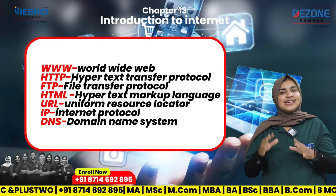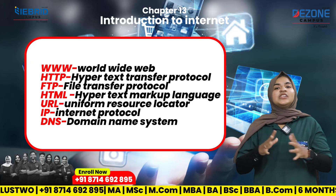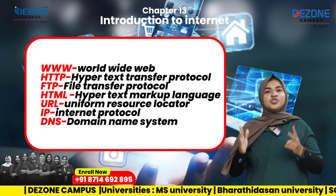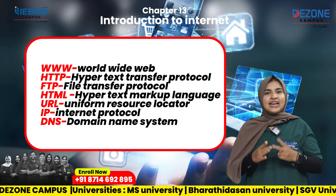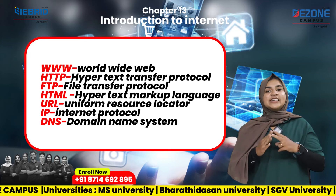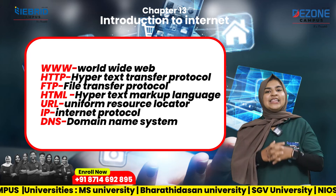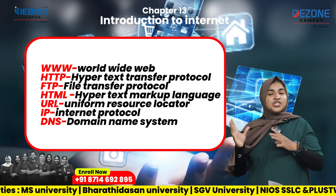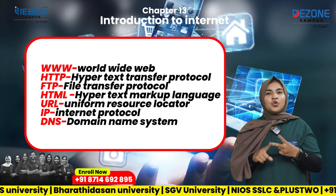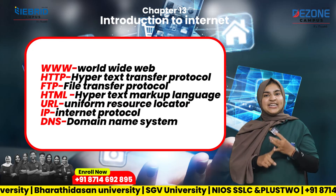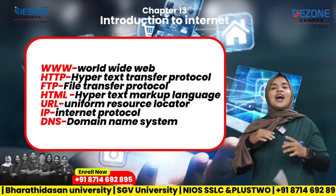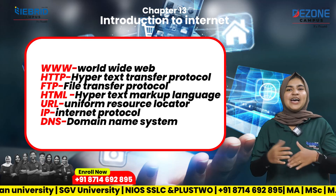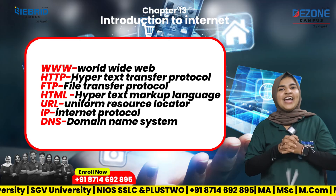So in this chapter we discussed: what is internet, uses of internet, and different modes of internet connection — Leased Line, DSL, Broadband, Cable Modem, and ISDN (Integrated Service Digital Network). We also covered short forms: URL, DNS, HTML, FTP, IP. We will upload the next chapter soon. Thank you.